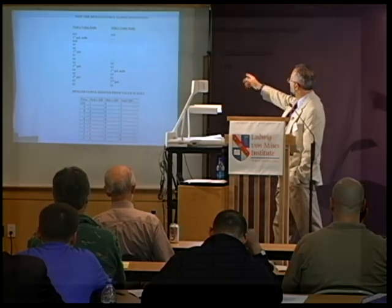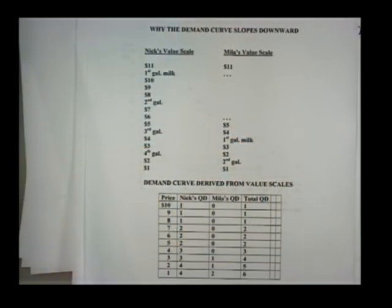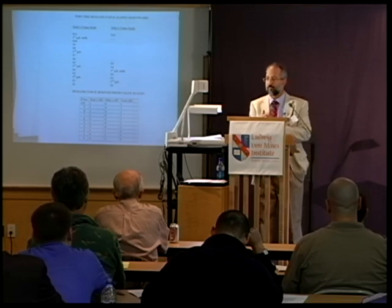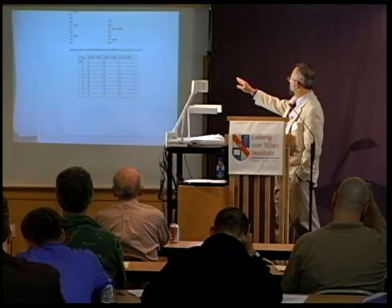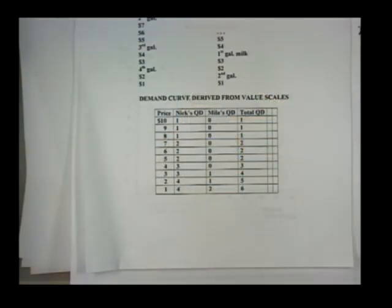So if the price is $3, that's when the person who ranks milk lower on her value scale will begin to purchase. As price falls, two things happen: people who bought at the higher price buy additional units, and people who bought nothing at the higher price begin to purchase. Adding horizontally everyone's quantity demanded at any given price gives the total market demand curve or demand schedule.